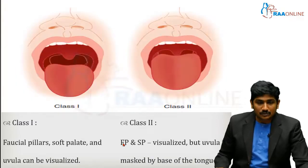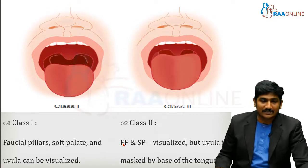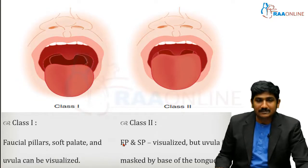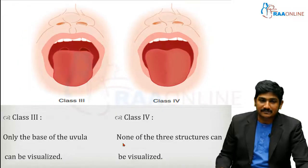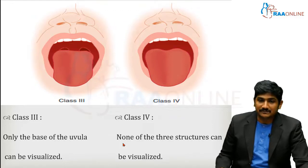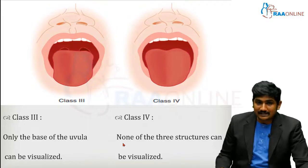The Mallampati score describes the relationship of the tongue within the oral cavity. Class 1: adequate opening — facial pillars, soft palate, and uvula are all visible. Class 2: relatively less open — facial pillars and soft palate are visible, but the uvula is masked by the base of the tongue. Class 3: only the base of the uvula is visualized; neither the pillars nor the tonsils are visible. Class 4: none of the three structures can be seen. A Mallampati score of 3 or more indicates a difficult airway.